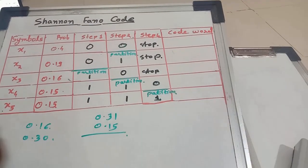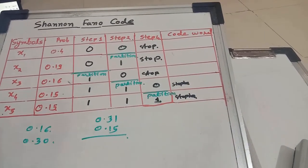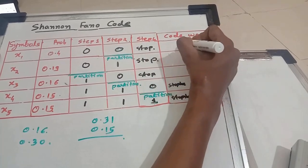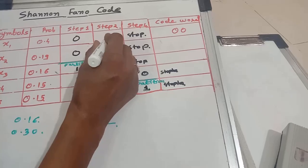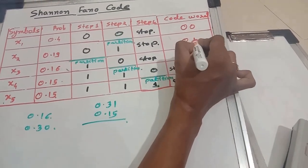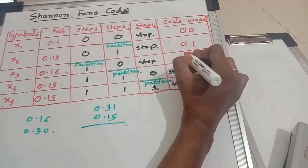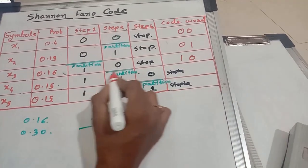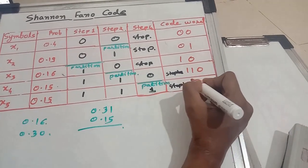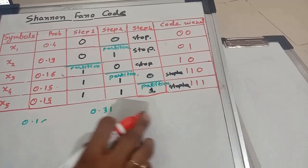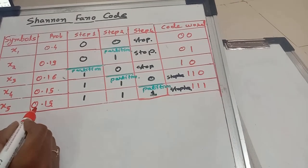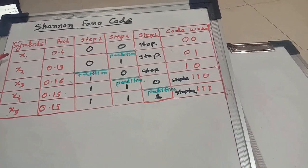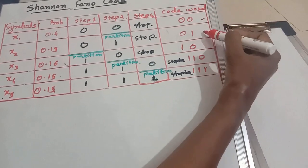Now we will assign the codewords to each symbol. The codeword for x1 is 00, for x2 it is 01, for x3 it is 10, for x4 it is 110, and for x5 it is 111. We can observe that the symbols having the lowest probability are assigned the longer codewords, and symbols with higher probabilities are assigned the shorter codewords.